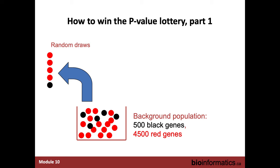How do we win the p-value lottery? Imagine a simplified example of pathway enrichment analysis. There are 500 black genes representing a particular pathway and 4,500 red genes that are not. You do a pathway enrichment test — but you could do the same on completely random genes. You randomly pull out a few genes, and in the majority of cases you should see red genes dominating because they make up the majority of the gene population. Therefore the corresponding p-value would not be significant, because you see a balanced or expected proportion of red and black balls.